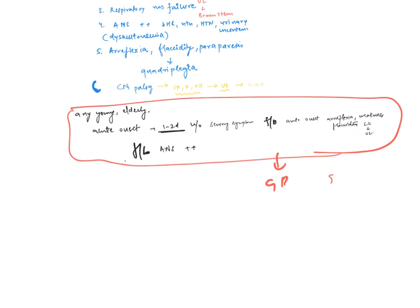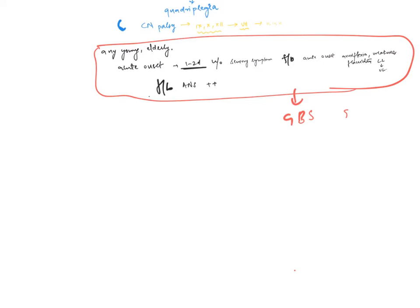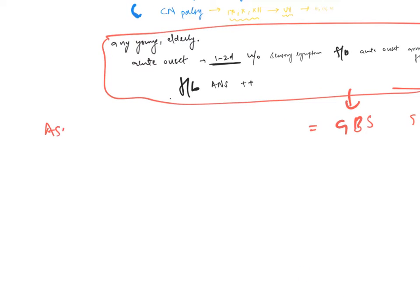When I talk about GBS, GBS creates acute onset ascending weakness plus loss of reflexes or areflexia. This equals GBS.